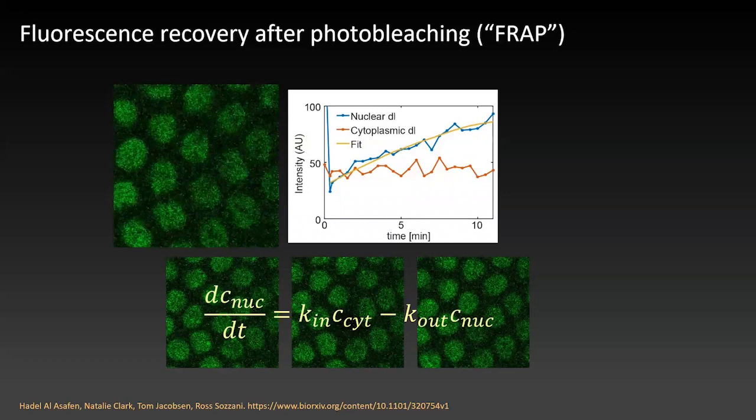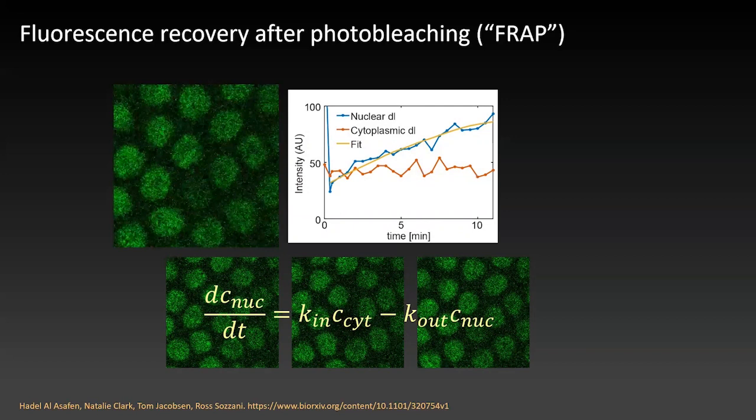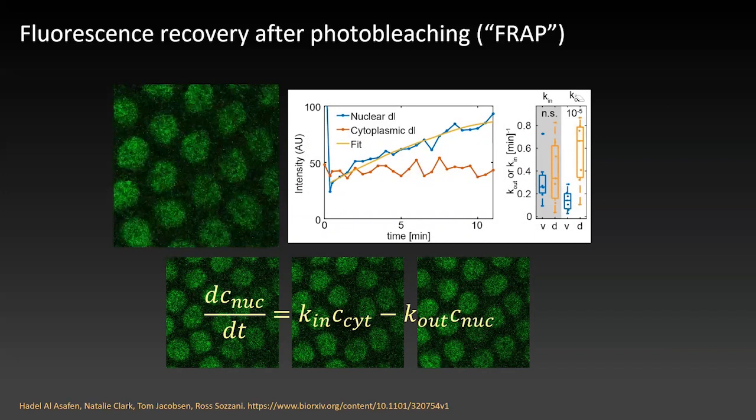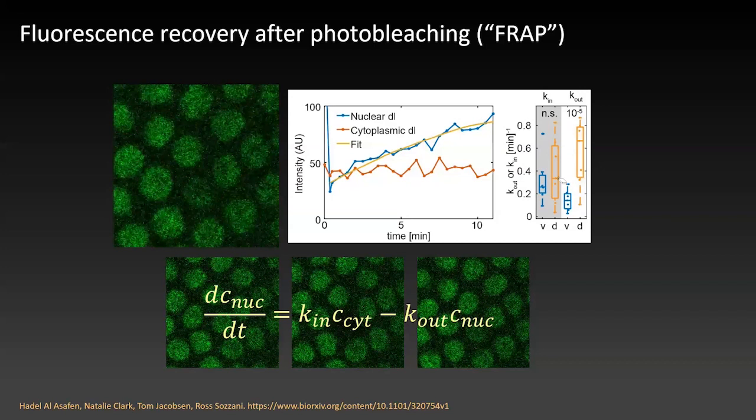From FRAP we can measure the nuclear import rate and nuclear export rate by fitting a simplified differential equation to the recovery curve. When we did this in different parts of the embryo, nuclear export rate differed depending on where we looked. On the ventral side the nuclear import rate and dorsal side import rate are not statistically significant from each other, but the nuclear export rate is definitely slower on the ventral side than on the dorsal side.